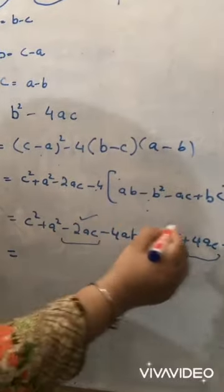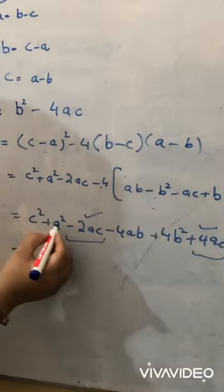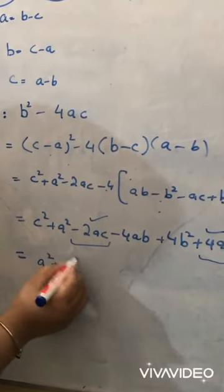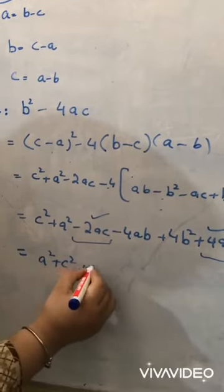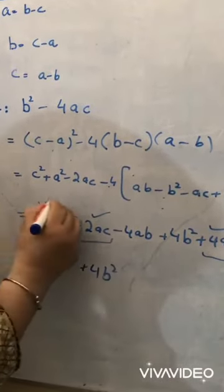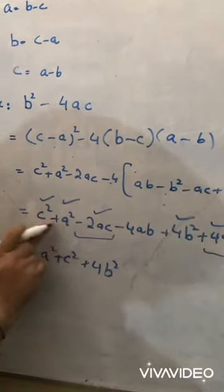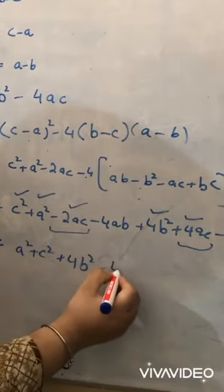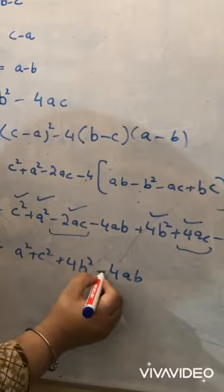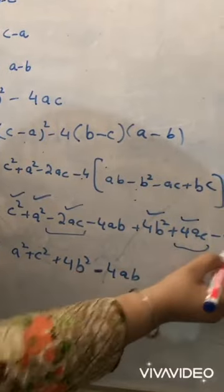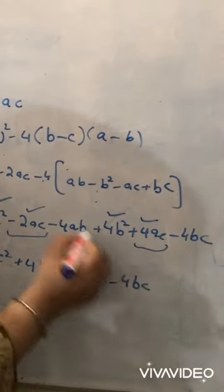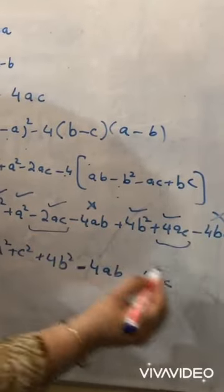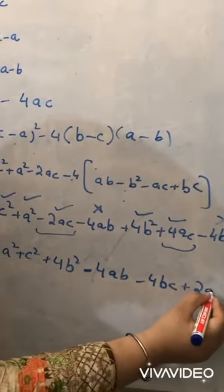The like terms are minus 2ac and plus 4ac. We add these two terms to get plus 2ac. Writing the perfect squares first: a² plus c² plus 4b², then minus 4ab minus 4bc, and when we add the two ac terms, we get plus 2ac. These are six terms.